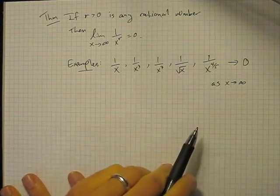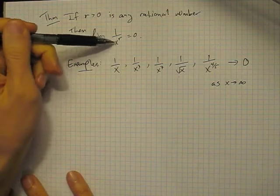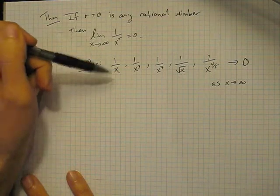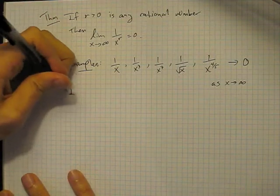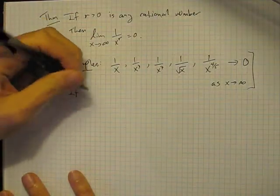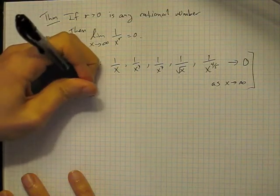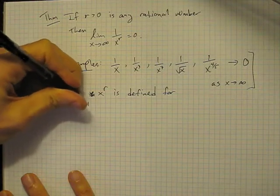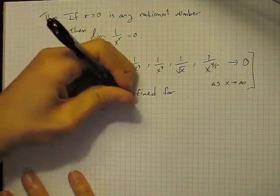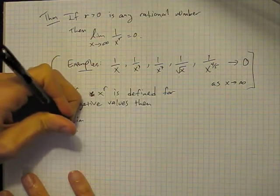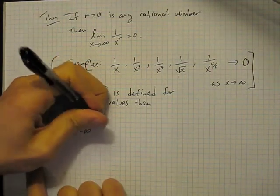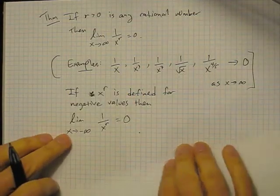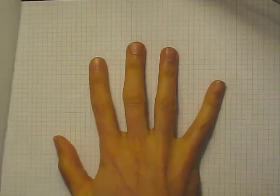Anytime you see 1 over x to any power, it will tend to zero as x goes to infinity. That's just because x to the r gets larger and larger no matter what r is, and so if you're looking at the ratio 1 over x to the r, then that ratio will get smaller and smaller. Similarly, if x to the r is defined for negative numbers, then the same thing is true when we look at the limit to the negative side: 1 over x to the r is equal to zero as x goes to minus infinity. This is an important theorem. We'll use this result a great deal.